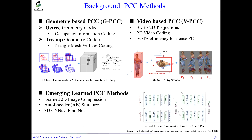Existing representative PCC methods were developed by MPEG, including geometry-based PCC and video-based PCC. GPCC relies on 3D geometry models such as octree models and surface models. In the octree geometry codec, point cloud is represented by octree decomposition in 3D space and its occupancy information is encoded. In the triangle soup geometry codec, point cloud is represented as a series of triangle meshes, where mesh vertices are encoded.